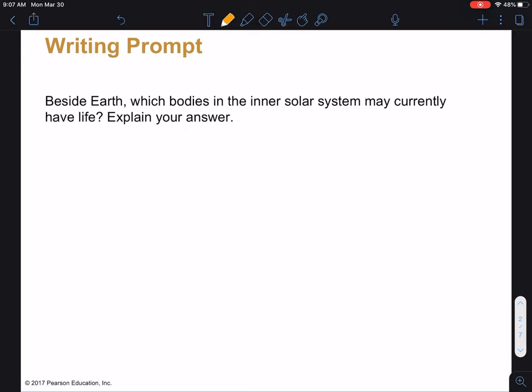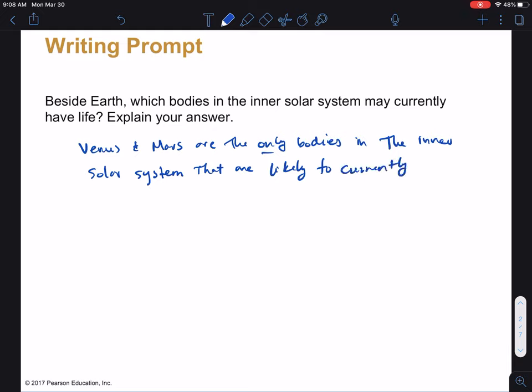All right, now that you've gotten something read down, I'll go over what I think is a good answer for this question. So my answer would be that Venus and Mars are the only bodies in the inner solar system that are likely to currently have life. Now why is this?